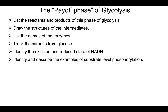In this video, this is part two of glycolysis, and so we're going to be looking at the payoff phase of glycolysis. This is reactions six through ten, where we're actually going to produce the ATP that glycolysis produces. By the end of this, I want you to be able to list the reactants and the products of this phase of glycolysis.